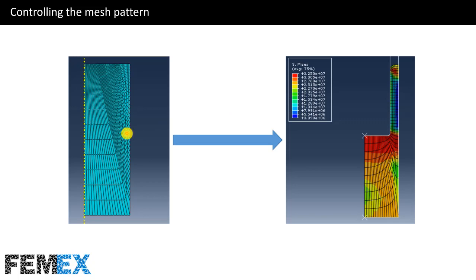In this model, I want to simulate the reverse extrusion process using the ALE technique. If you want to simulate reverse extrusion using the ALE technique, you must use this kind of mesh pattern that leads to an accurate simulation. If you do not use this mesh pattern and create a simple mesh pattern instead, you cannot use the ALE technique because errors will occur and the simulation will not be completed. So you must use the CEL technique, which takes more time. Therefore, it is better to use this mesh pattern and the ALE technique.